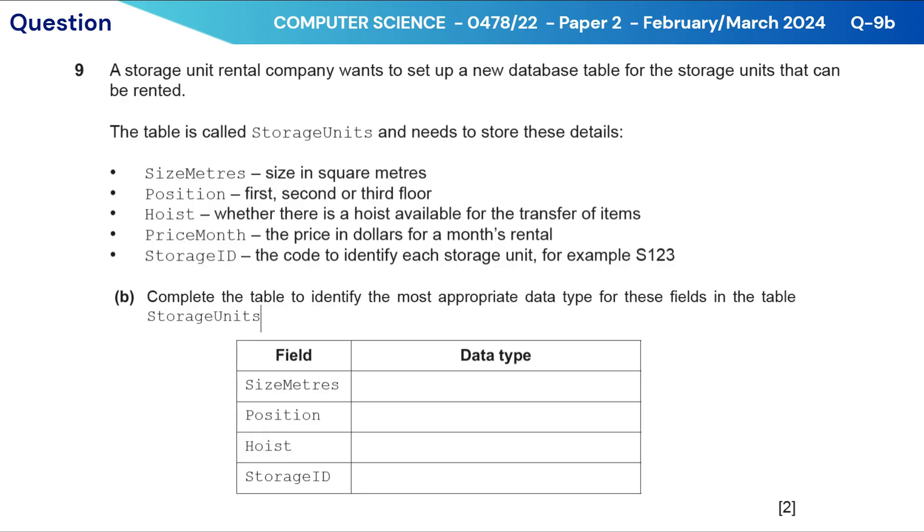Storage ID, the code to identify each storage unit, for example, S123. Complete the table to identify the most appropriate data type for these fields in the table storage units.